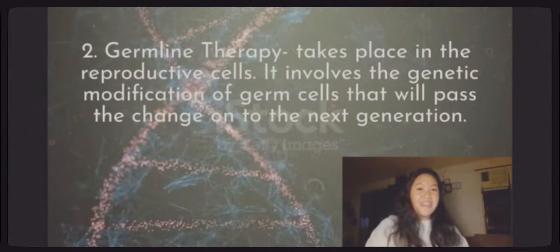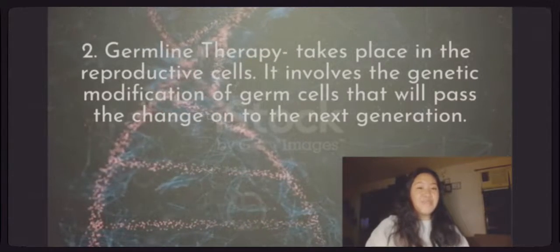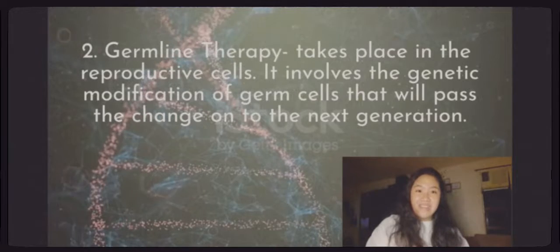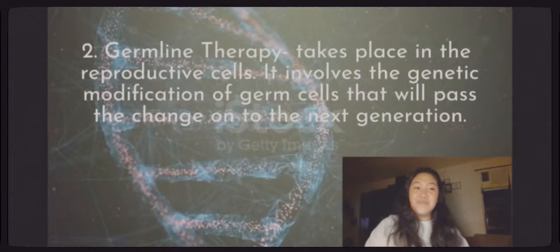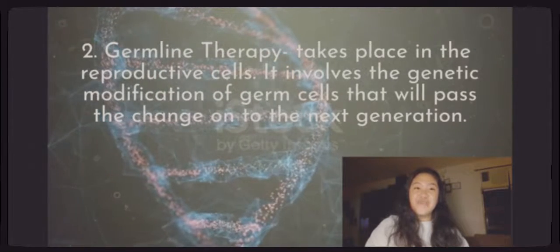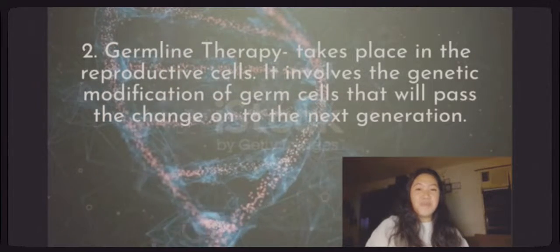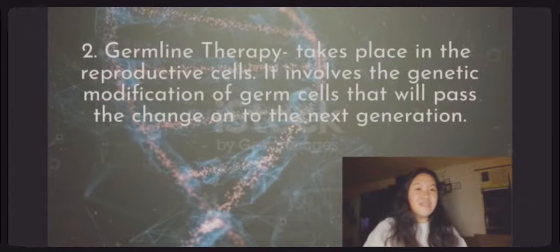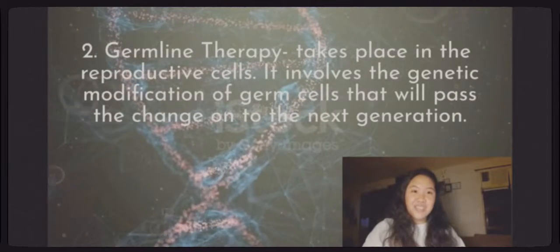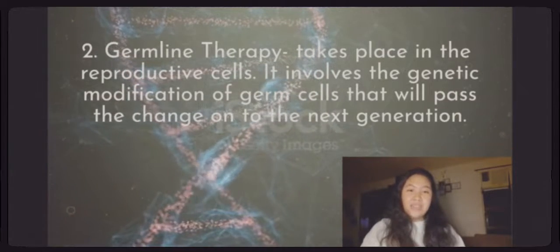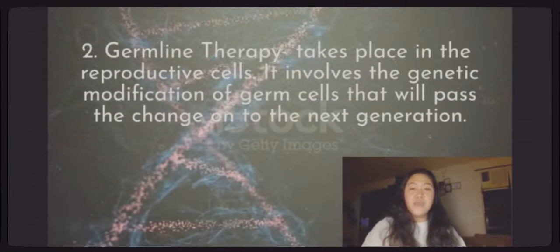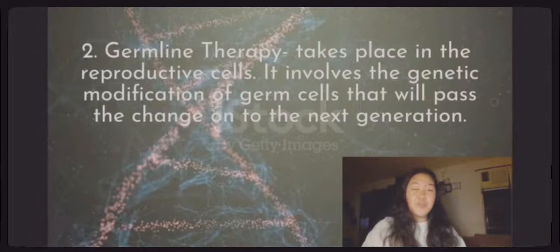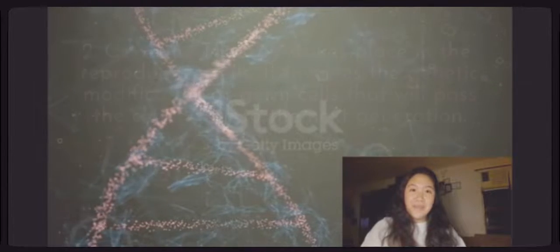Germ-line therapy takes place in the reproductive cells. It involves the genetic modification of germ cells that will pass the change on to the next generation. This type of gene therapy only has to be done one time to be permanent.